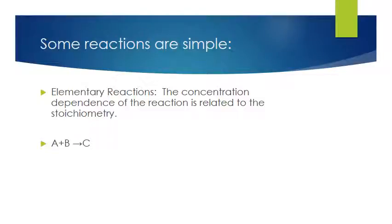For example, if we have a reaction A plus B goes to C, the rate of formation of A is negative — because A is not being formed, it is being consumed. The nomenclature we use in this course is always in terms of rate of formation, and then we add a positive or negative sign to make it correct. There is a rate constant K, which is a function of temperature, multiplied by the concentration of A and the concentration of B. Notice that the order of A is 1 and the order of B is 1, because in the reaction we have one mole of A and one mole of B reacting.